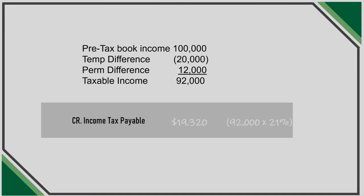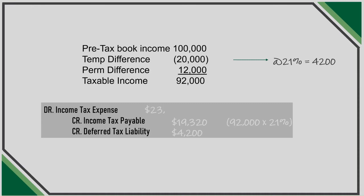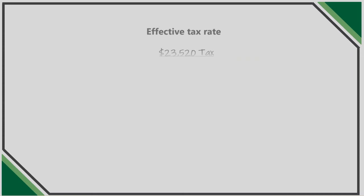Then they record any DTLs or DTAs. In this example, the depreciation deduction creates a future taxable item, so 21% times $20,000 gives us a deferred tax liability of $4,200 — a credit to deferred tax liability. Finally, tax expense is plugged as a debit for $23,520. The effective tax rate in this example, comparing $23,520 of tax expense to book income of $100,000, is 23.52%, not 21%. The permanent difference created a higher tax than expected.